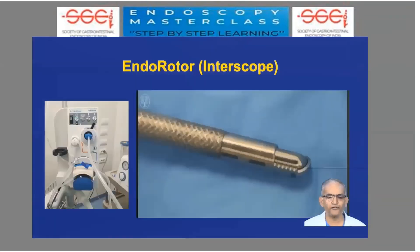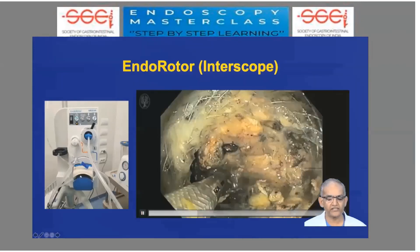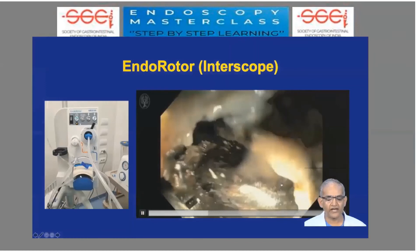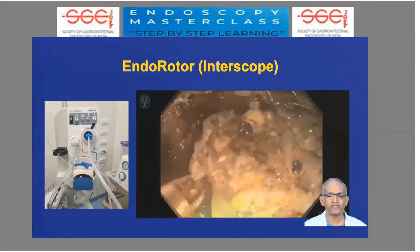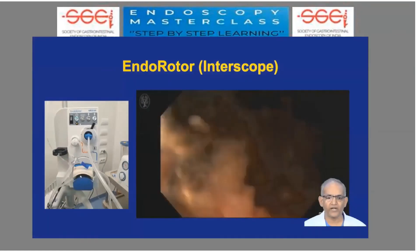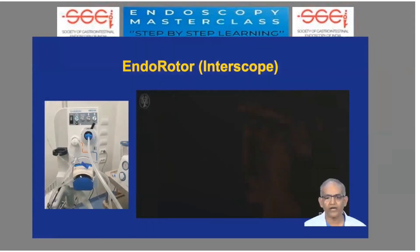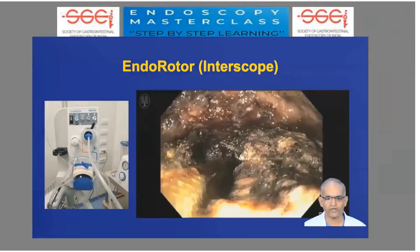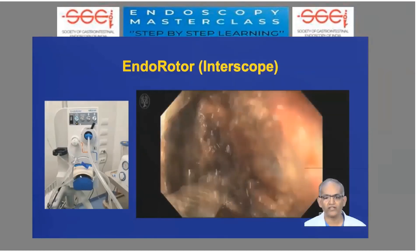Looking at the future, there is a new device called the Endorotor or Interscope, similar to a rotablator used by cardiologists. This device rotates inside and causes necrosectomy by touching the hard debris. It has suction at one end through a hollow lumen which sucks the tissue back and nibbles it off. One has to be very careful — although it is found to be safe in early experience, only time will tell whether blood vessel injury can occur.